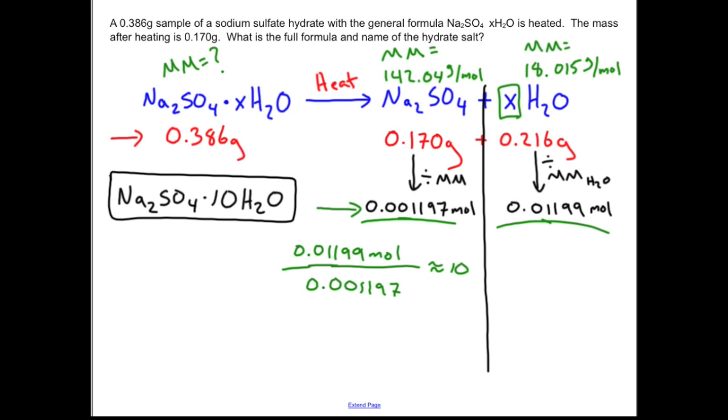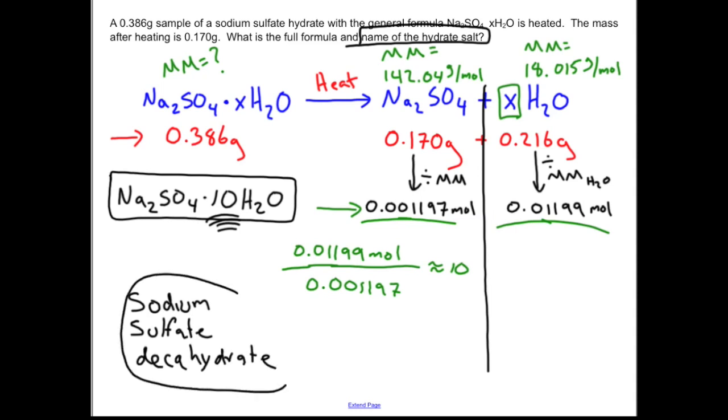And there's a naming scheme that goes along with this. And if you look up to the original question, I ask us to name it. It's pretty easy to look up where you just need to know the number of waters. And it's going to follow that naming scheme where a 1 is going to be mono, a 2 is going to be di, 3 is going to be tri. It turns out 10 is deca. And so if I were to write this full thing out, I would have sodium sulfate decahydrate. And that communicates to other chemists this chemical formula.